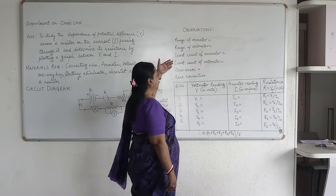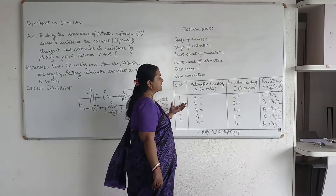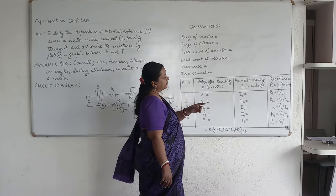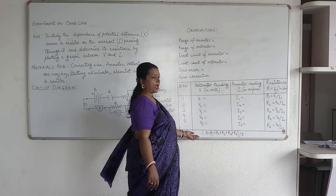As we keep on varying the resistance, we find the different values of ammeter and voltmeter and then find the resistance. R1, R2, R3, and take their average.